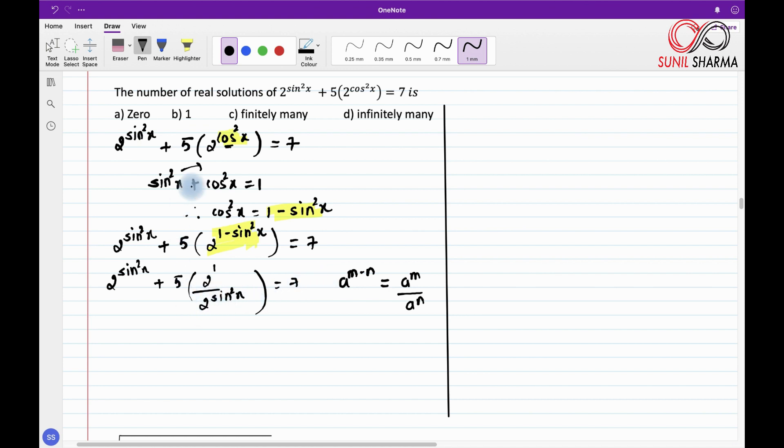Now we can see here that this 2^(sin²x) and 2^(sin²x), we can go for simple substitution and convert this horrendous looking equation into a very simple equation. So let us substitute 2^(sin²x) = t. So what happens? This yellow thing will get converted into t and this 5 into 2^1. 2^1 is 2 and 5·2 is 10, so I will straight away write 10/t = 7. So my dear students, now I don't want this t in the denominator.